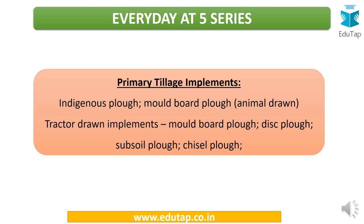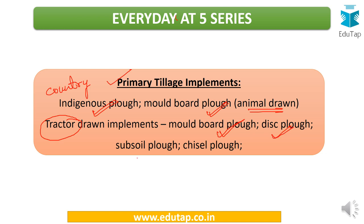The first question I put forth yesterday: list down certain primary tillage implements and secondary tillage implements. You need to know the names because in the examination there might be a simple question where you are asked to pick a particular primary or secondary tillage implement among the options given. When you talk about primary tillage implements, there is the indigenous plough, also called country plough, and there is the moldboard plough — both of these can be animal drawn. For tractor-drawn primary tillage implements, there is the moldboard plough, disc plough, subsoil plough, and chisel plough.